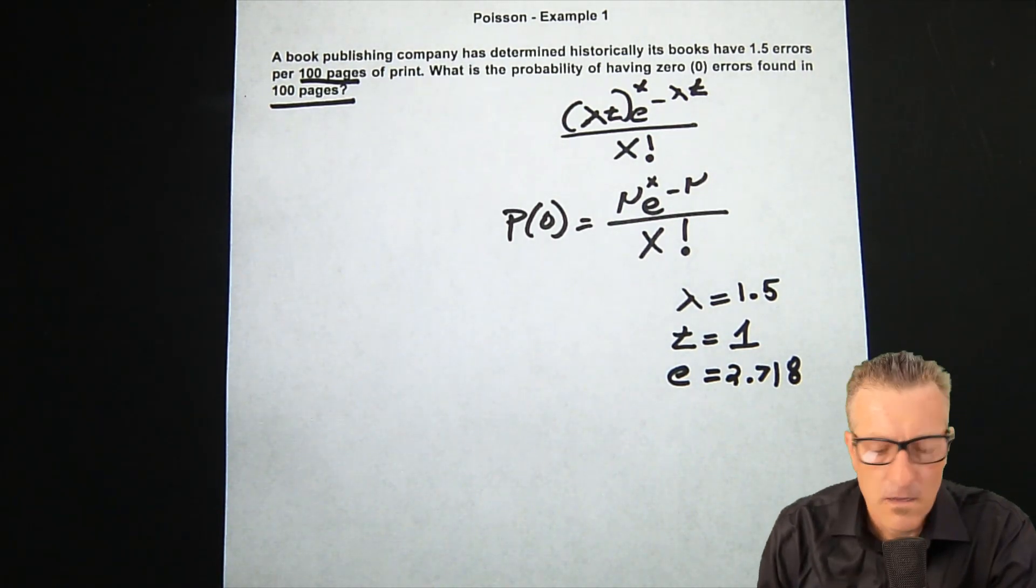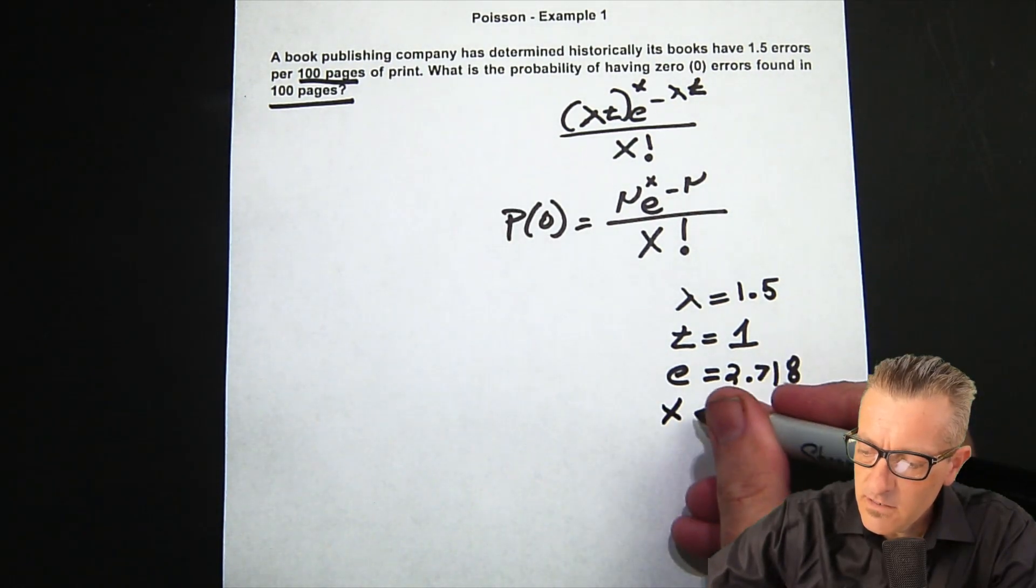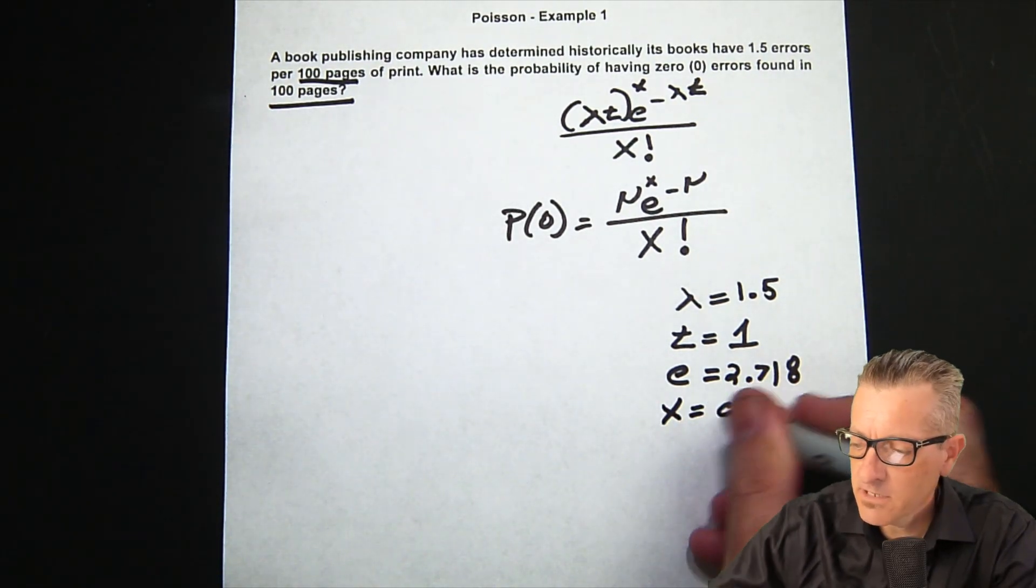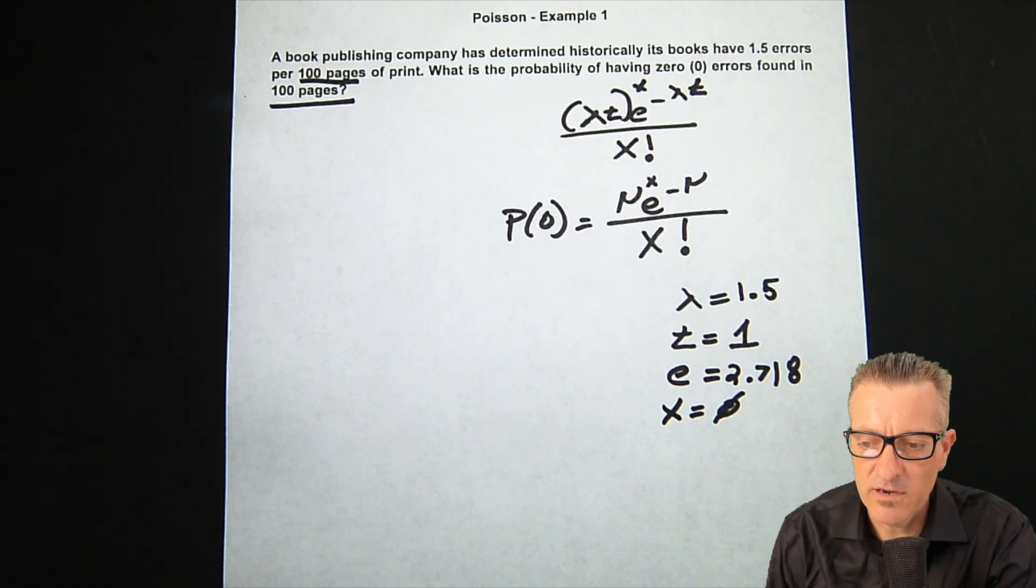Our X that we're looking for is zero because we're looking for zero errors. The Poisson distribution is when you're looking for something within a certain interval of time or distance or whatever the interval represents.